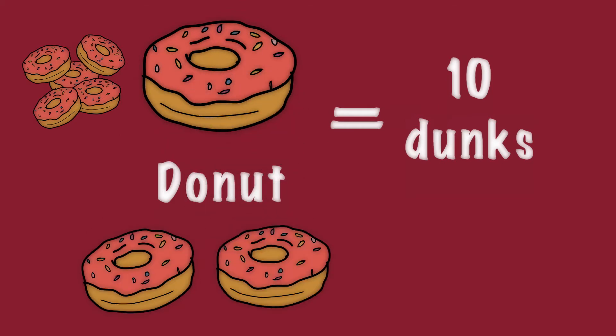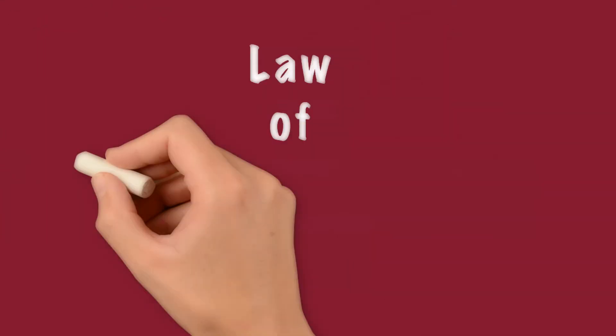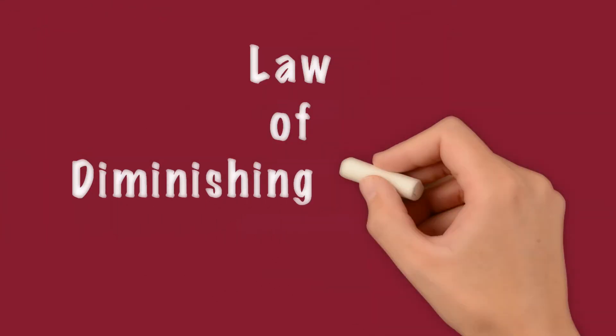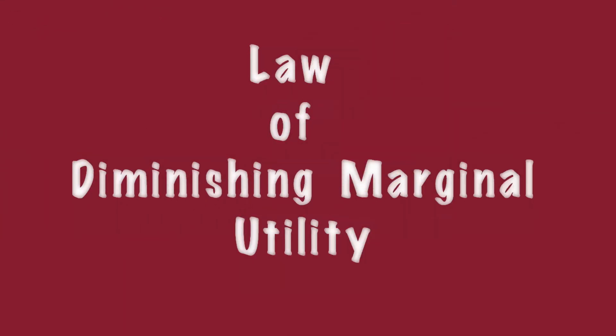How about the third donut? It's easy to imagine that every additional donut gives you lesser and lesser dunks. And there comes a point where you don't want any more donuts. This effect is what economists call the law of diminishing marginal utility.